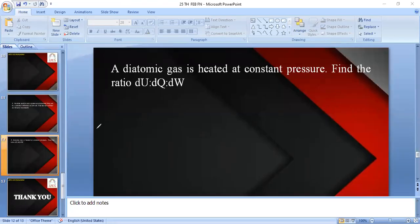If a diatomic gas is heated at constant pressure, find the ratio dU is to dQ is to dW. So here, the simple formula for dU in any particular case is equal to nCv dT.